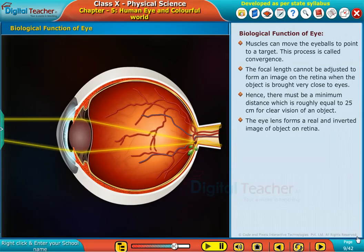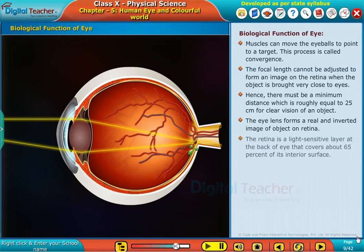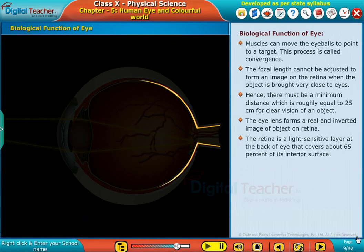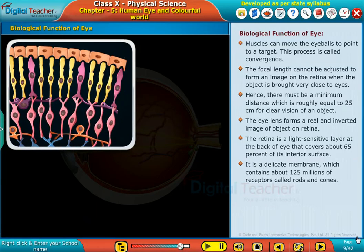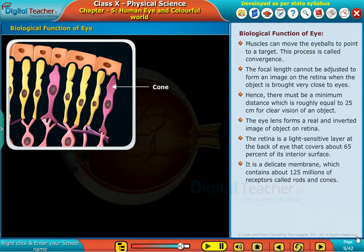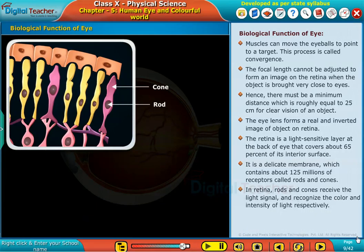The lens forms a real and inverted image of the object on the retina. The retina is a light-sensitive layer at the back of the eye that covers about 65% of its interior surface. It is a delicate membrane which contains about 125 million receptors called rods and cones. In the retina, rods and cones receive the light signal and recognize the color and intensity of light respectively.